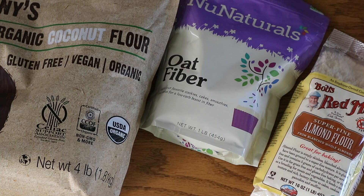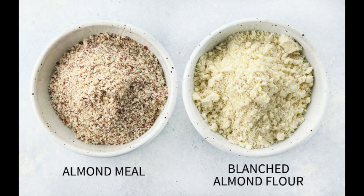Almond flour and any other nut flour will act very differently from coconut flour and oat fiber. Any nut flour will usually work, but almond is the most readily available and tends to be the cheapest if you're buying it pre-made. There's an important distinction between almond meal and blanched almond flour. Almond meal is the whole almond ground up, including the skin. Blanched almond flour is made from almonds that have been boiled quickly to release the skins, which are then removed and ground down into a powder. This tends to be a lot fluffier because it can be ground to a much finer texture, so always opt for blanched almond flour when you can.